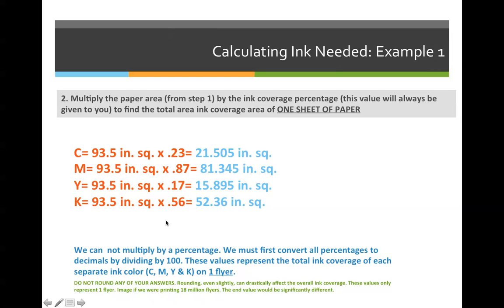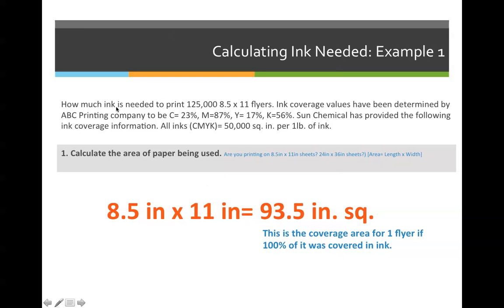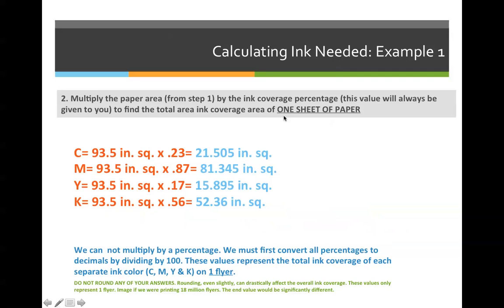Then we multiply by the percentage of ink coverage for each color. However, we cannot multiply by a percentage — we have to multiply by a decimal. So I took the percentages from the original problem and divided by 100. When you multiply across: 93.5 inches squared times 0.23 equals 21.505; times 0.87 equals 81.345; times 0.17 equals 15.895 inches squared; and times 0.56 equals 52.36 inches squared.